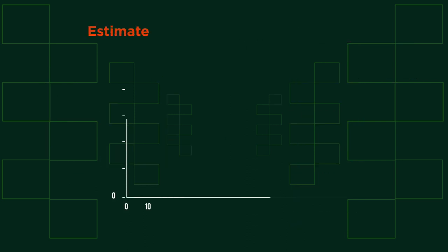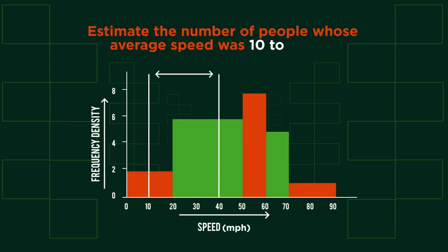Have a go at this question. Estimate the number of people whose average speed was 10 to 40 miles per hour.